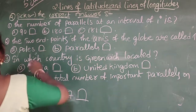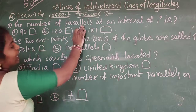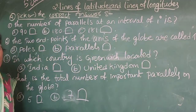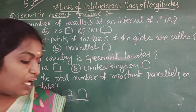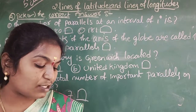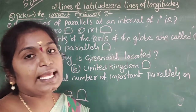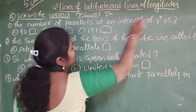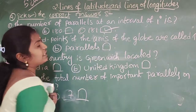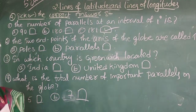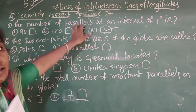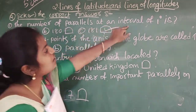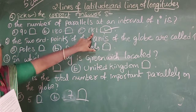First question: The number of parallels at an interval of 1 degree is? Parallels means lines of latitude. How many lines of latitude are there? Including 1 degree intervals, we have 181 lines of latitude, called parallel lines. So the number of parallels at an interval of 1 degree is 181.